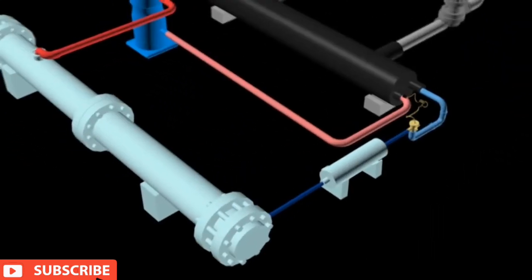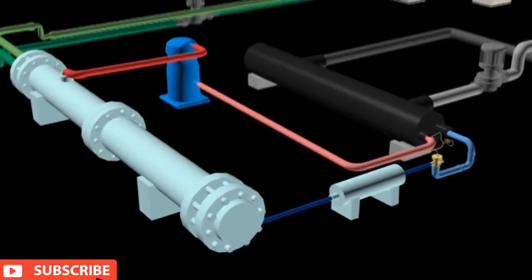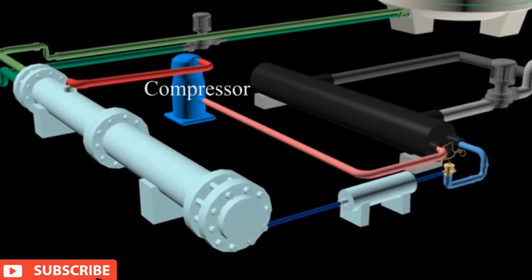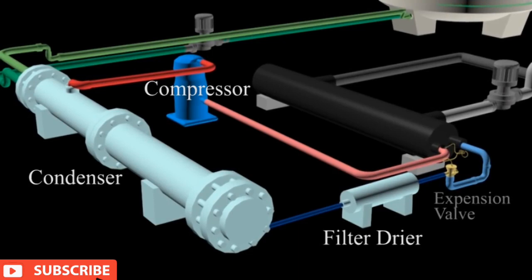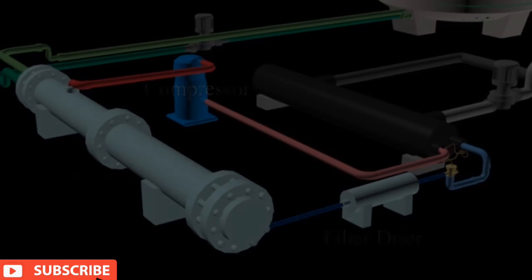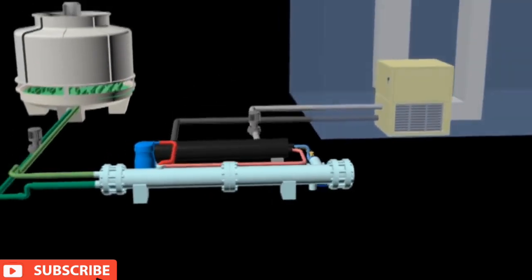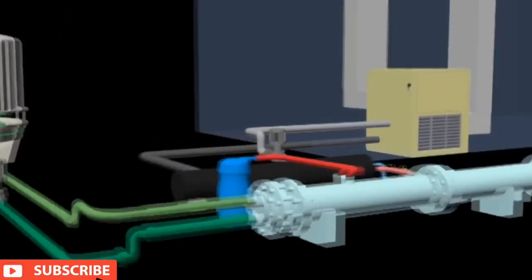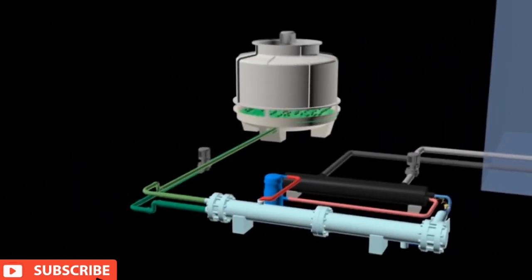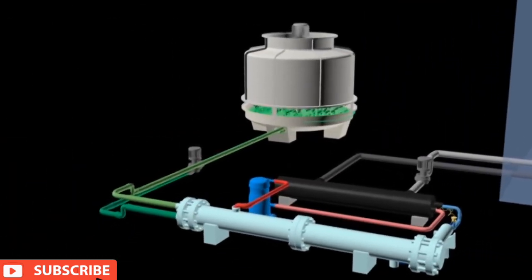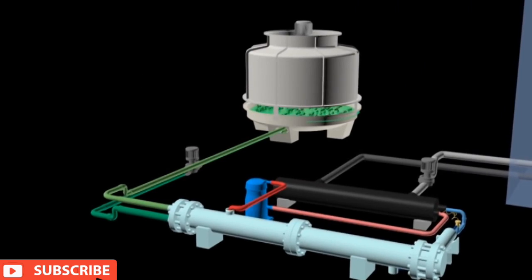The components involved in the refrigerant cycle are compressor, condenser, filter dryer, expansion valve, and evaporator. For the chilled water cycle, the components involved are the air handling unit and water pump. In the condenser water cycle, the components needed are the cooling tower and water pump.